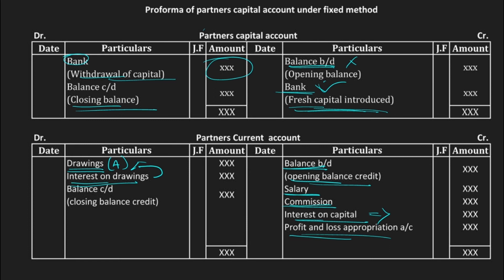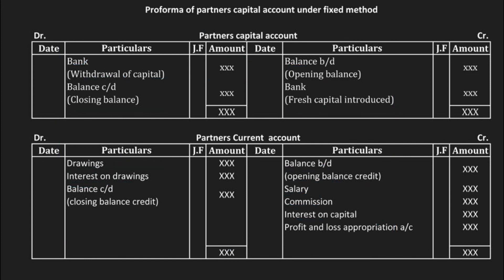After all entries you will get either a debit balance or a credit balance. If the credit side is more, the closing balance — balance carried down — goes on the debit side; if the debit balance is more it goes on the credit side. So these are the formats of the partners capital account and partners current account under the fixed method. In the partners capital account write only three entries: balance brought forward, capital introduced, and withdrawal of capital. Everything else goes in the partners current account.